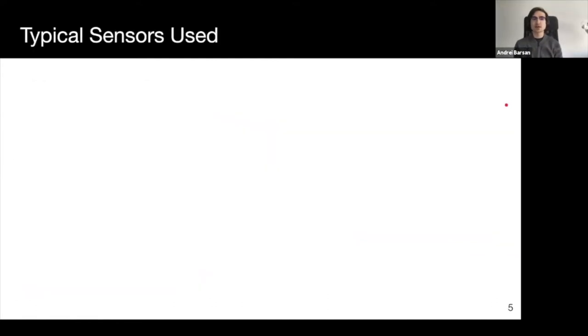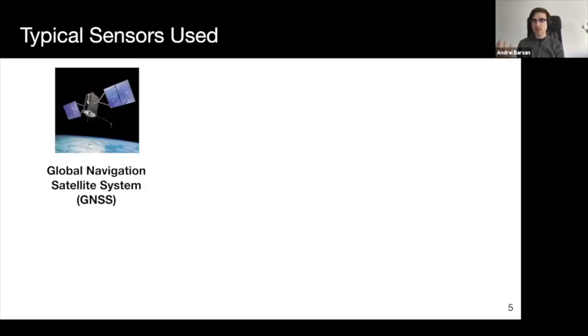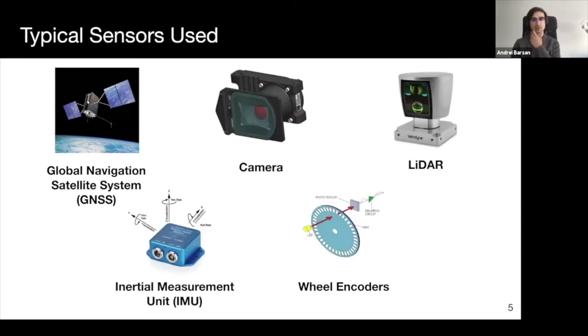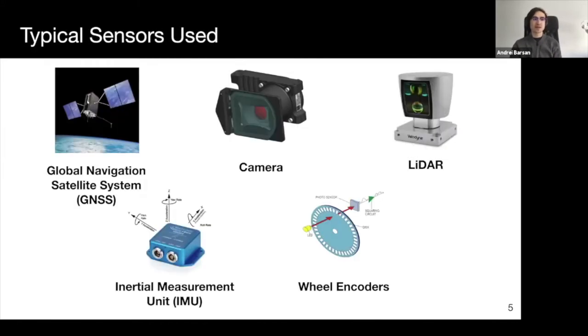Let's now look at what sensors are typically used to solve the task of localization. By far, the most common sensor used is the Global Navigation Satellite System, or GNSS, which is often used for computing initial pose estimates, which are then refined with other sensors such as cameras, LiDARs, inertia measurement units, wheel encoders, and so on. Over the last three decades, cameras and LiDARs have been leveraged in a very wide variety of localization algorithms.